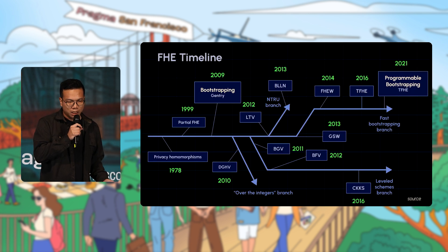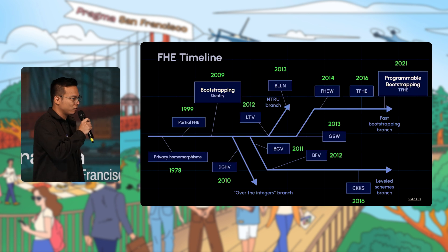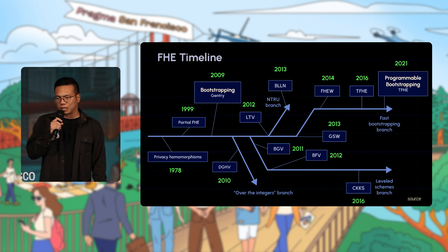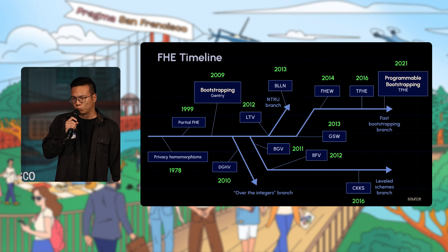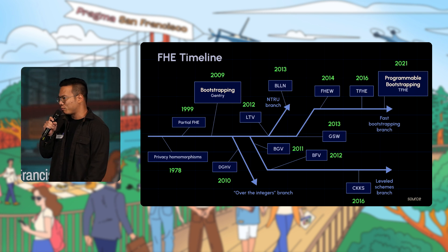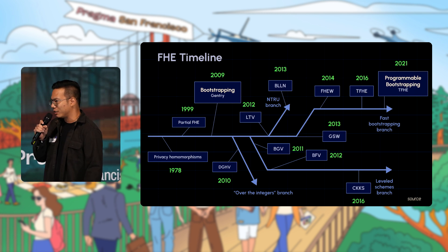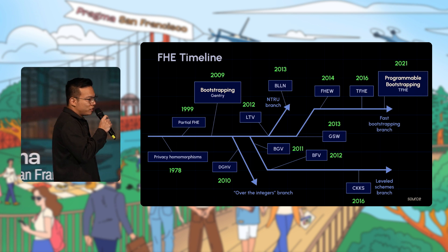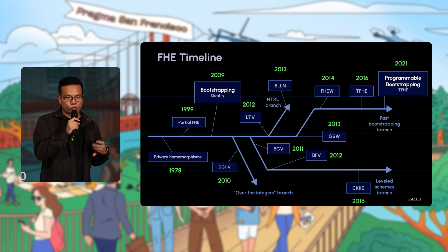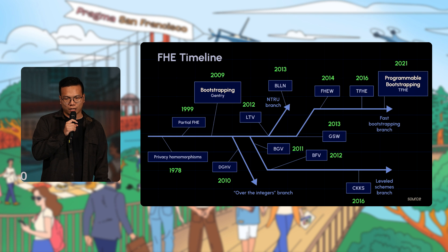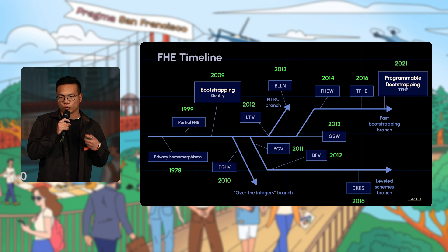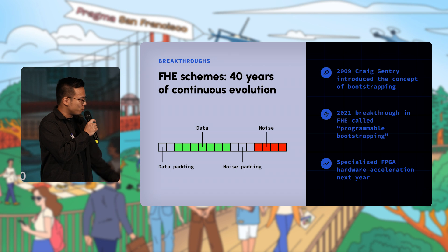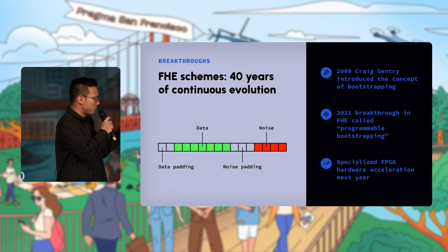FHE is not new — this concept has been around for about 40 years. It first came in the 70s with privacy homomorphism; back then it was just pure fantasy, more of an idea. It was really 20 years later that the first proof of feasibility emerged with the Paillier cryptosystem, which could support some additions.